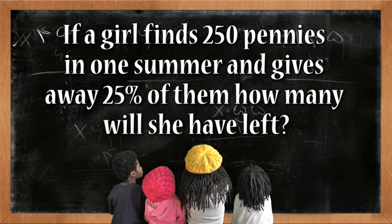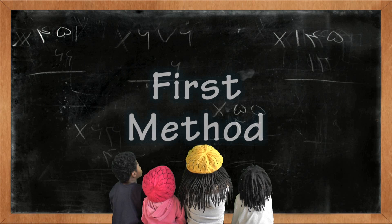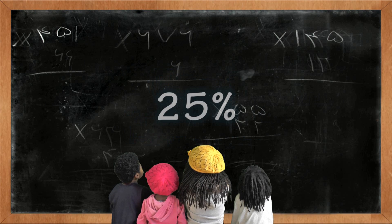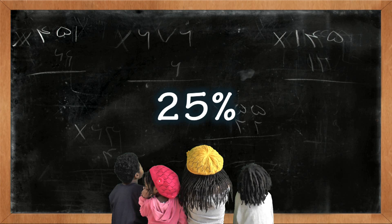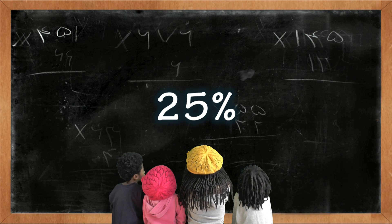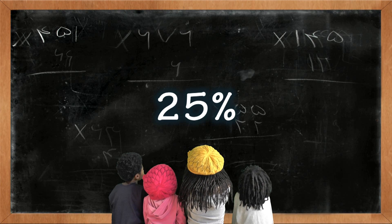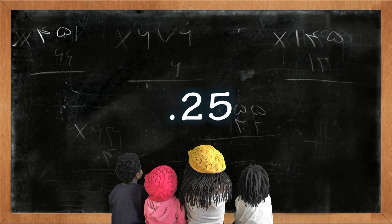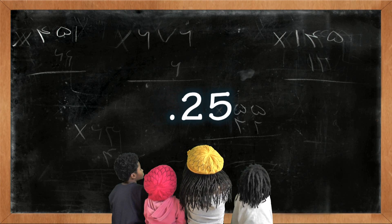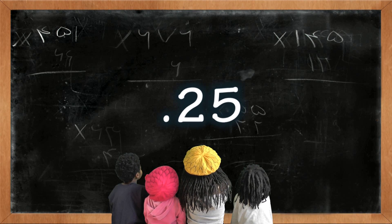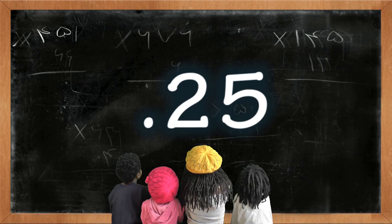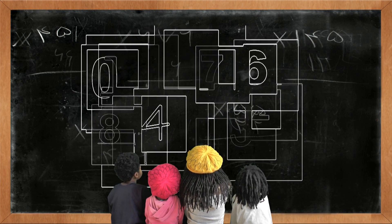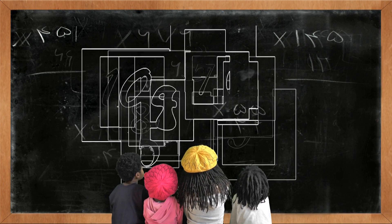There are two ways to get your answer. Here's the first method. First you want to convert the 25% into a decimal. To do this you simply remove the percent sign and put a decimal point right before the number 2. Then you multiply the 250 by .25.